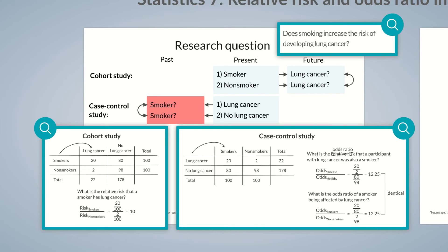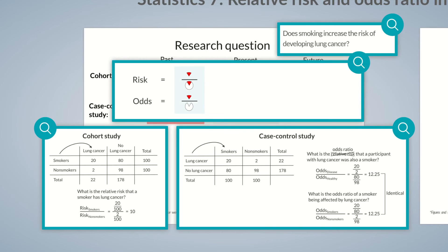This is a major advantage of the odds ratio, as it enables us to evaluate the answer to a question that hasn't been directly examined. In our case-control study, we calculated an odds ratio of 12.25, and in our cohort study, a relative risk of 10 — there isn't a large gap between both values. We can take a further step: if the disease is rare, we can use the odds ratio as an estimate of the relative risk. Think of the pie chart analogy — risk is a slice divided by the entire cake, while odds is a slice divided by the rest of the cake. If the disease is very rare, the slice is small and the denominators become similar, so the odds ratio approximates the relative risk.